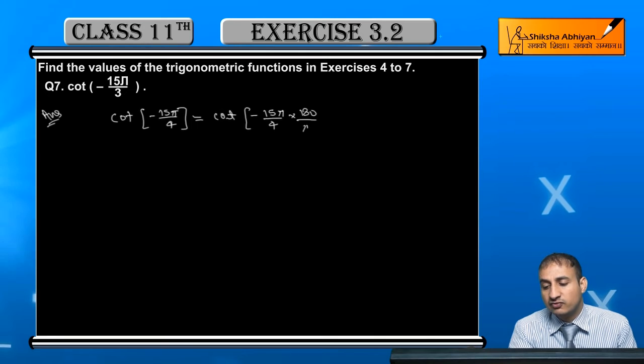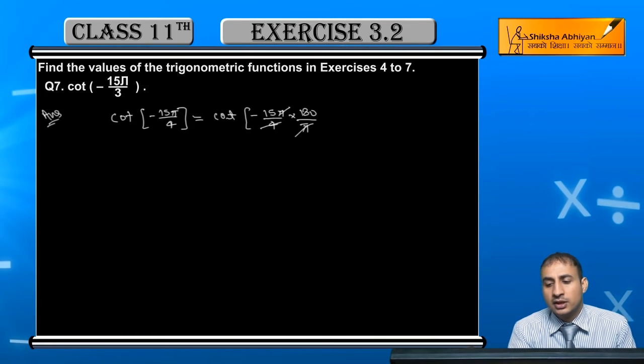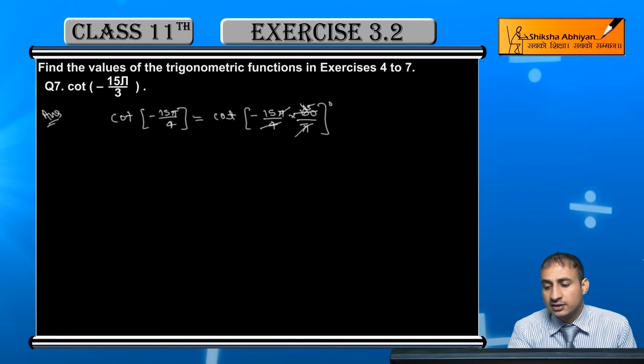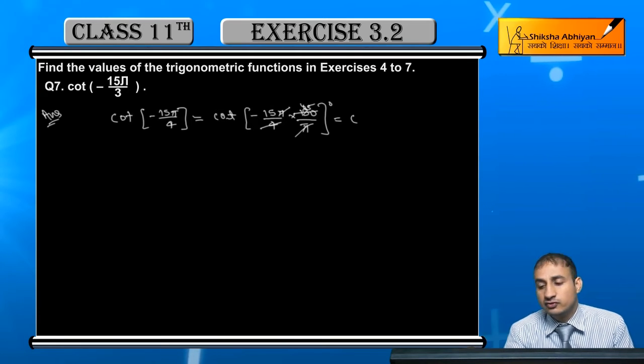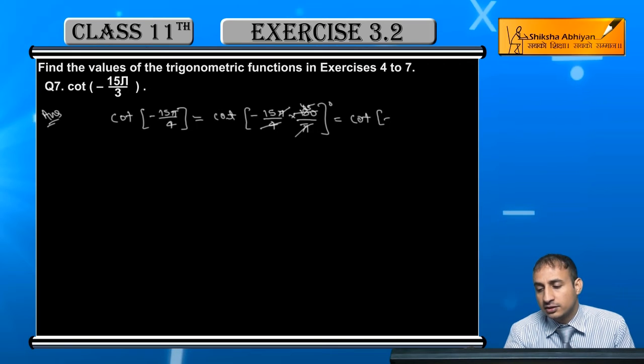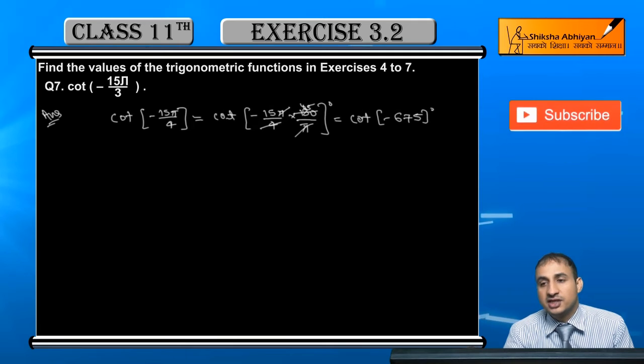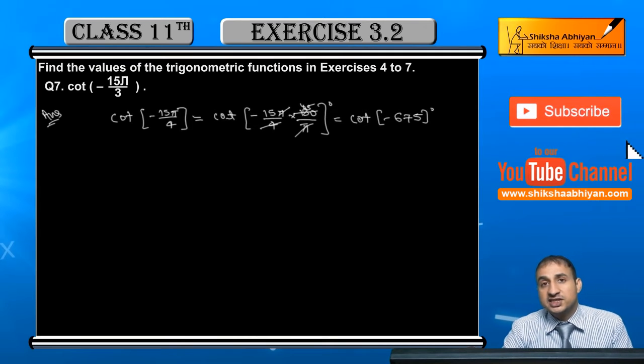Multiply by 180 by pi. Pi cancels out. Again, 4 into 180 multiply by 45. Now, 45 into 15 is cot minus 675 degrees.